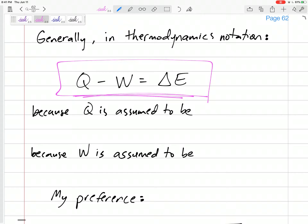Or this is what the book says. The book is going to say Q minus W equals delta E, because the book kind of always assumes that positive Q, Q is heat...